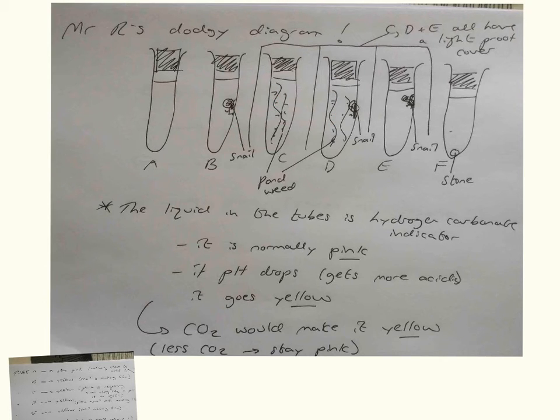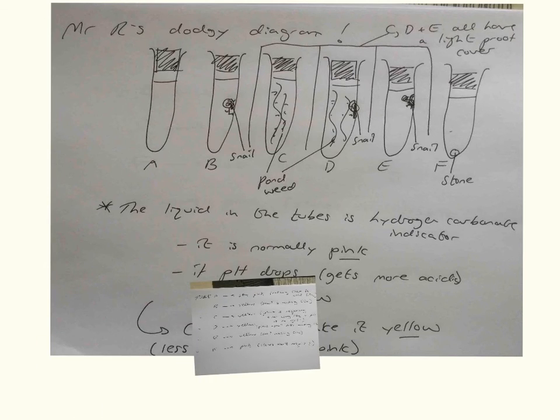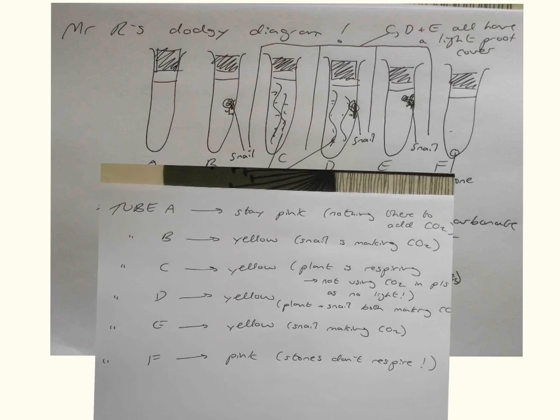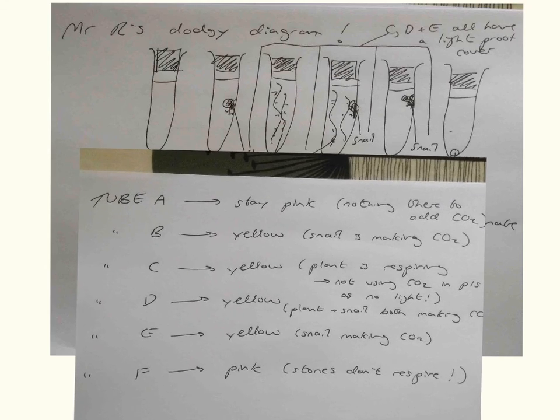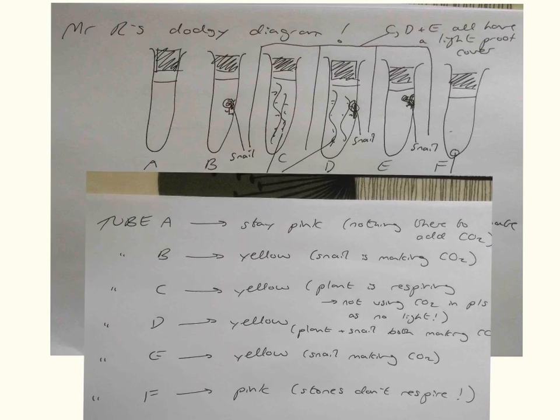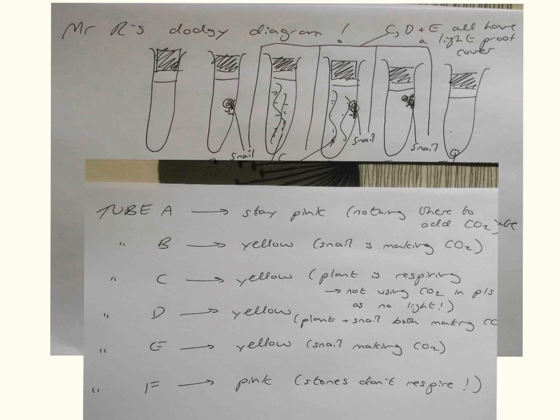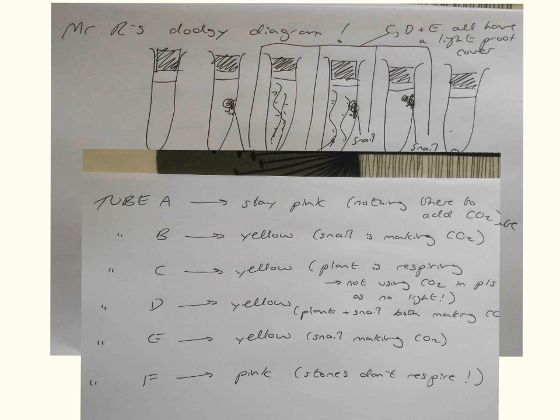So then you'll be asked which ones are going to be pink, which ones are going to be yellow. Tube A, this one here, well nothing's going to happen to that because nothing's in there so that's going to stay pink. Tube B, this one here, that's going to go yellow because the snail is in there and snails respire and make CO2. Then we've got tube C.